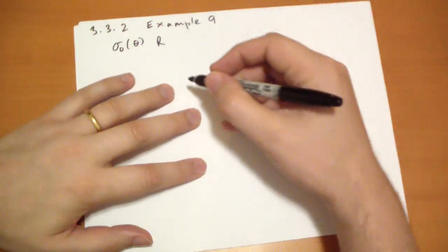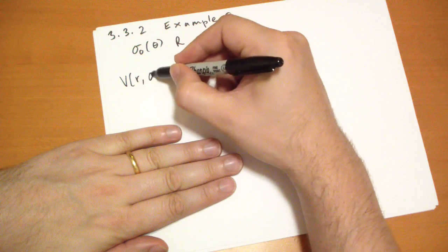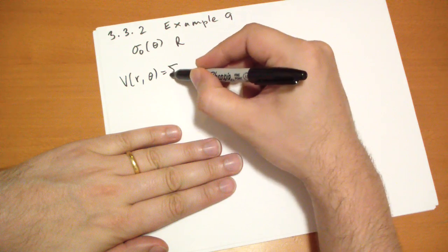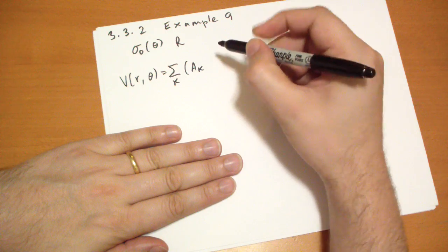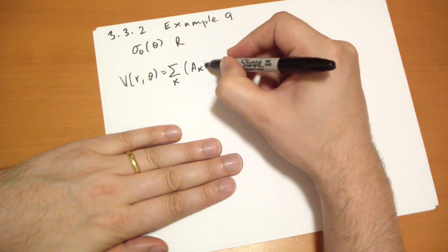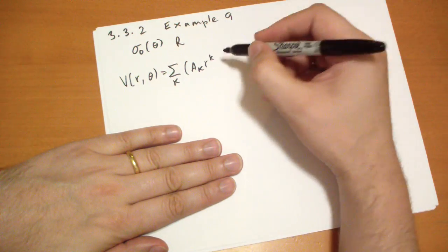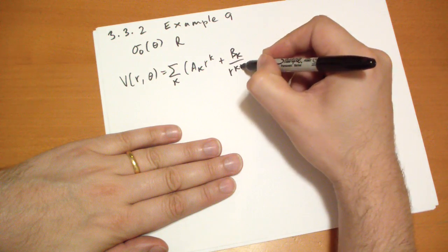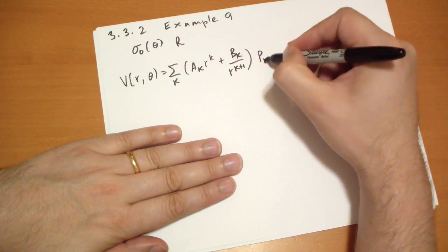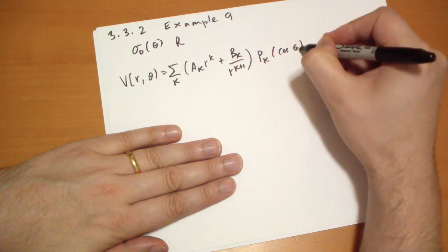From earlier results, we found that the potential when you have azimuthal symmetry is going to look something like this: the sum of A_K*R^L plus B_K over R^(L+1), times P_L(cos theta).